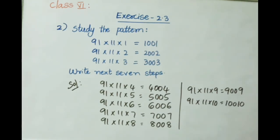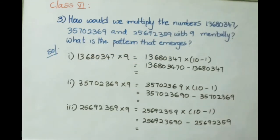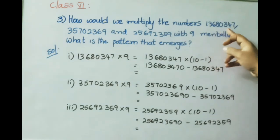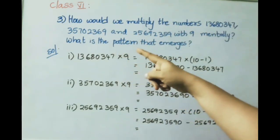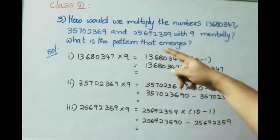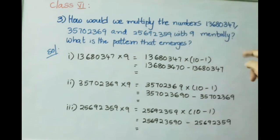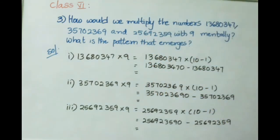Without doing the calculation, we have written the next 7 steps of this pattern. Now let us see the third question: How would we multiply the numbers 1 crore 36 lakh 80,347; 3 crore 57 lakh 2369; and 2 crore 56 lakh 92,359 by 9 mentally? We need to find what pattern emerges after multiplying.